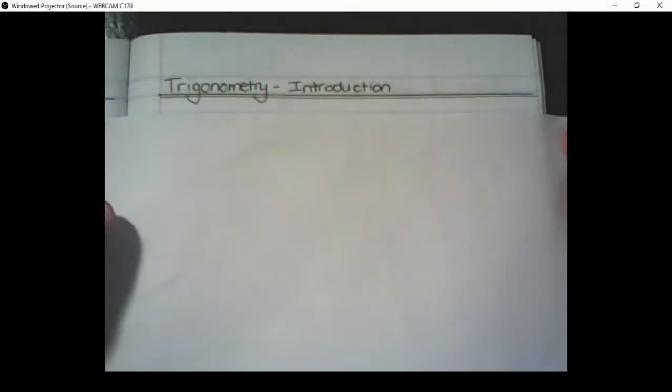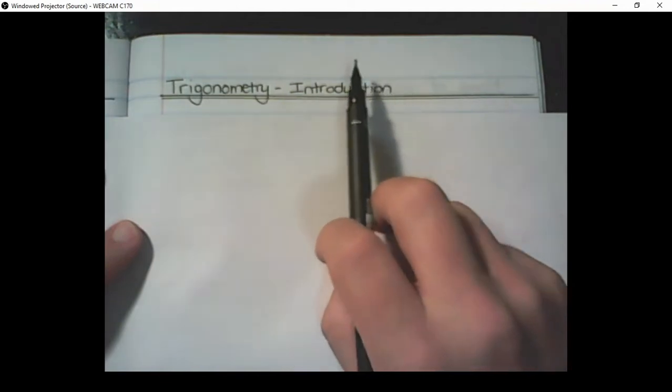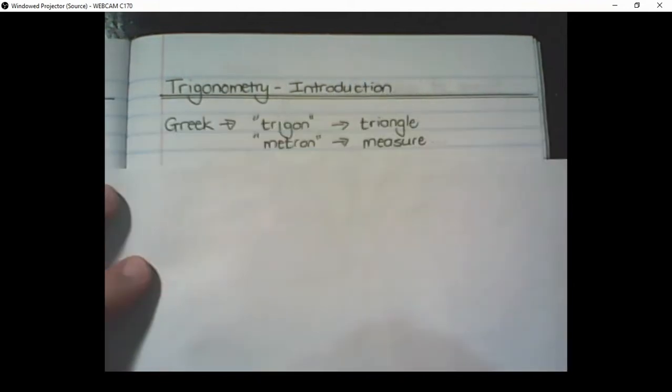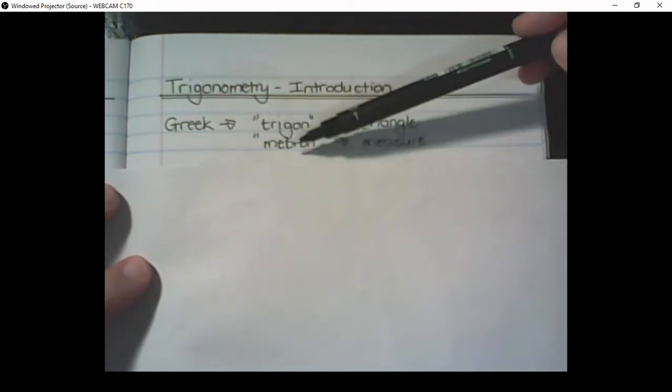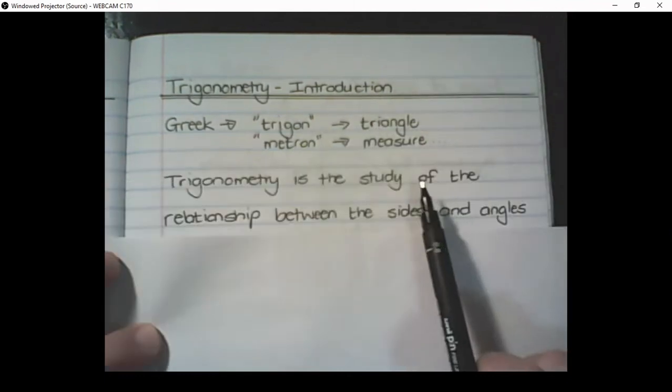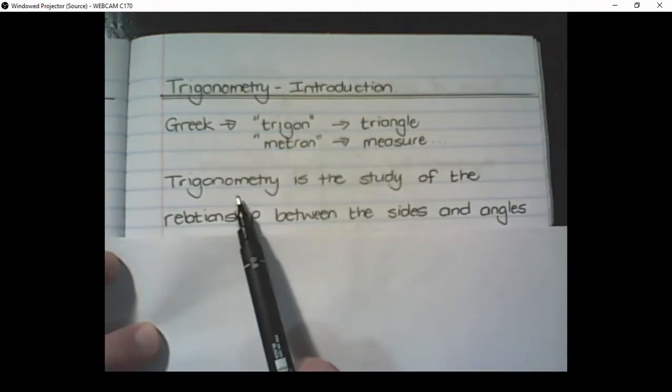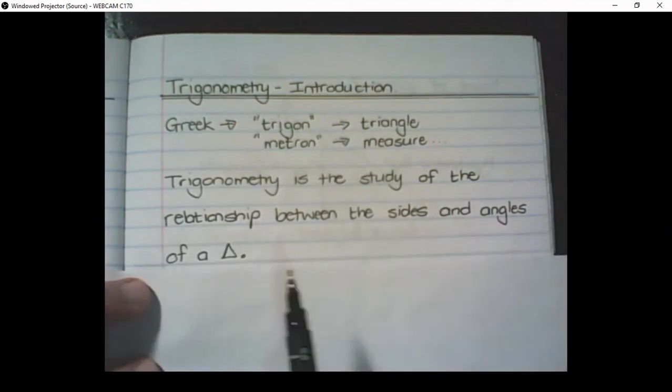Hello guys, this is our first video on trigonometry, and in this video I am introducing trigonometric concepts to you. So the word trigonometry has some Greek parts in it. Trigon means triangle and metron means measure. So trigonometry is the study of the relationship between the sides and angles of a triangle.